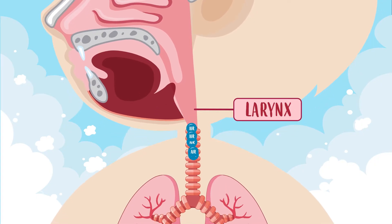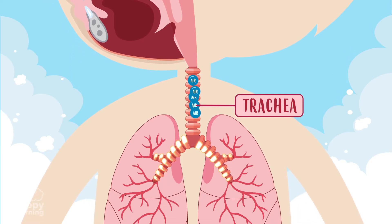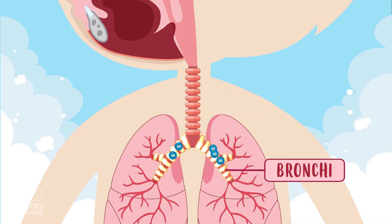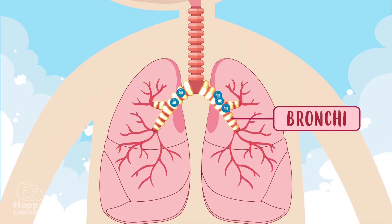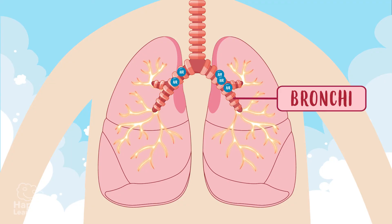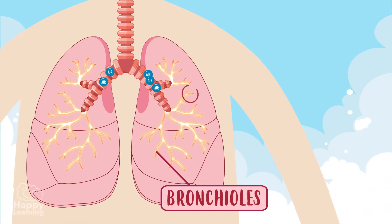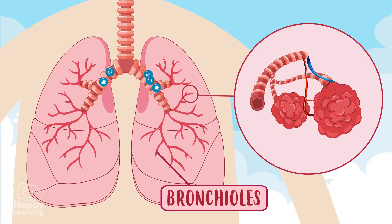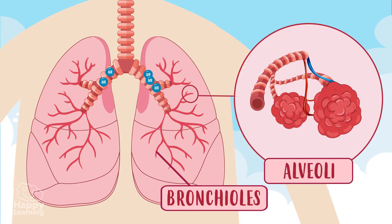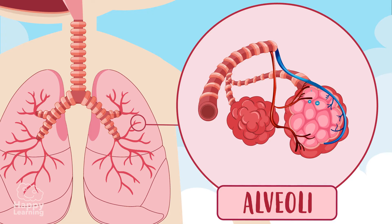Once the air has passed through the larynx, it reaches the trachea. The trachea is divided into two tubes through which the air passes, which are called the bronchi. The bronchi, once inside the lungs, branch into narrower tubes called bronchioles, and each bronchiole leads into many small sacs called alveoli. It is there, in the alveoli, where gas exchange takes place.